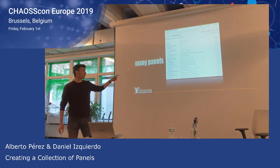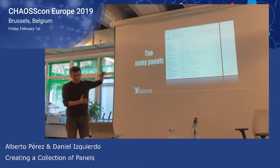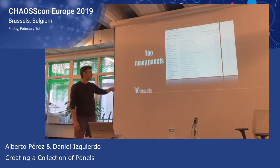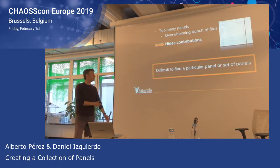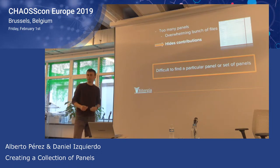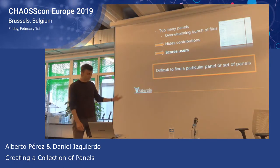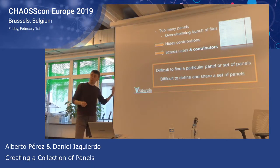This is the repository right now. We have many panels, really too many panels. This is a screenshot of the whole scroll of the web page. If you need to find a particular panel, you have to go there and try to find the panel you need only by its name, which is not easy. The problem is this is not only overwhelming for users, but also it hides contributions. You can contribute your panel, but it's very difficult to let others find it. So it scares users, but also contributors, because contributors don't want to put panels inside because it's difficult for users to find them.